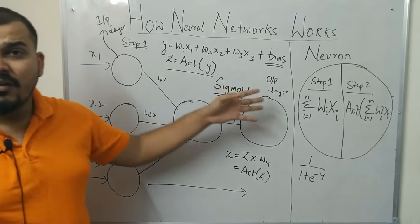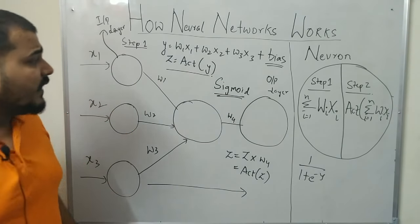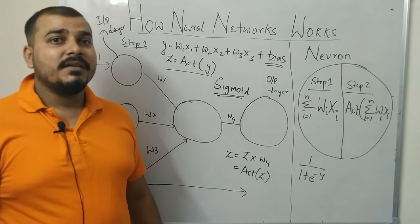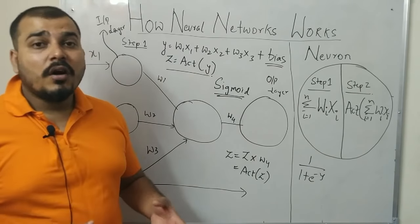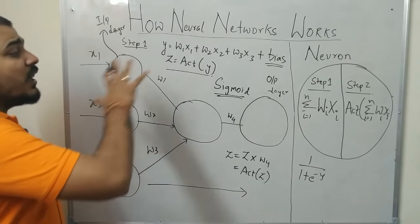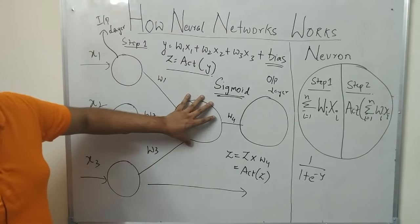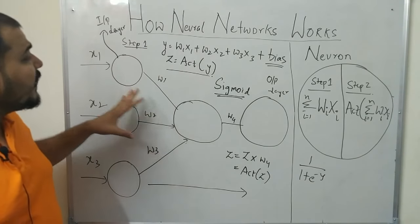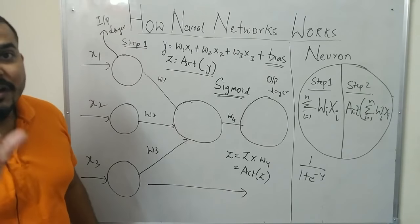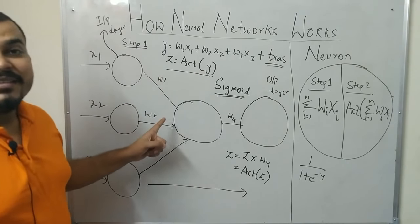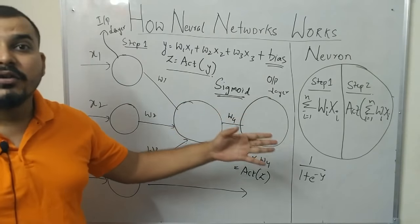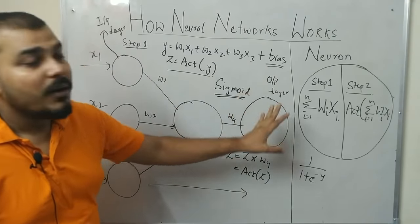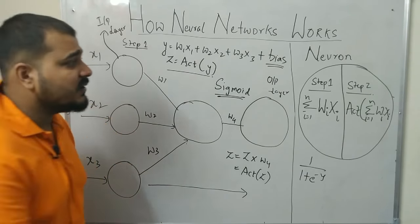In the upcoming videos I will explain the different types of activation functions, when to use which activation function, and what combinations to use in a neural network. In this example I only used one neuron in the hidden layer, but you can have any number of neurons all doing the same process. Which neurons get triggered is decided by the weights, and these weights need to be updated as training goes on — this updating of weights happens with the help of back propagation.